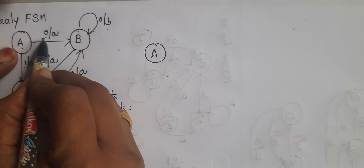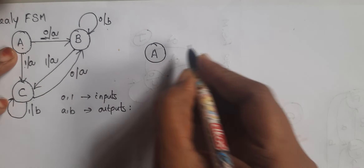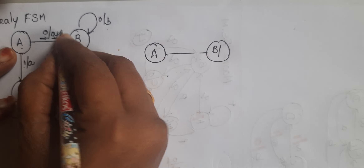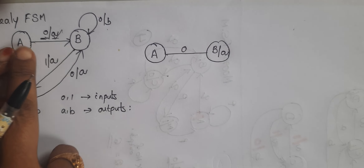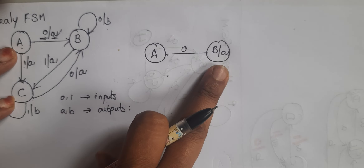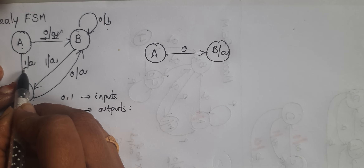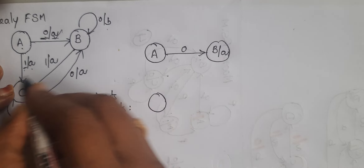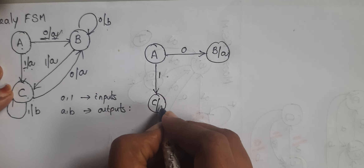For state a, when the input is 0, it goes to the next state b with output a. So draw the b state with output a. For input 1, it goes to state c with output a.